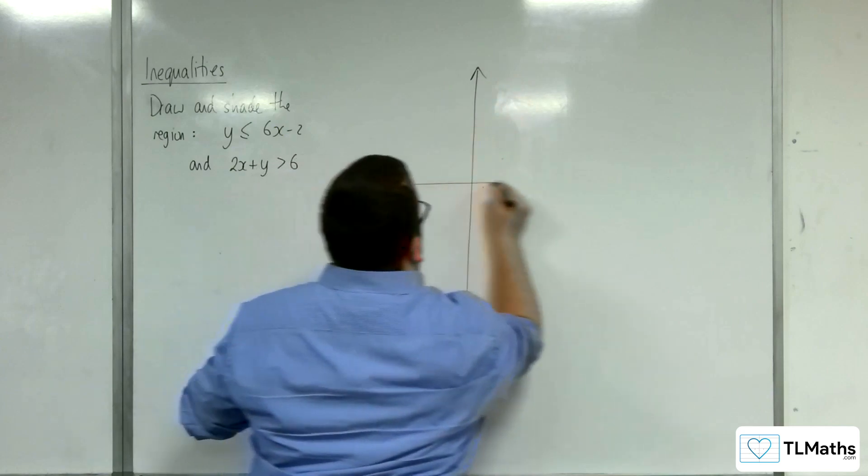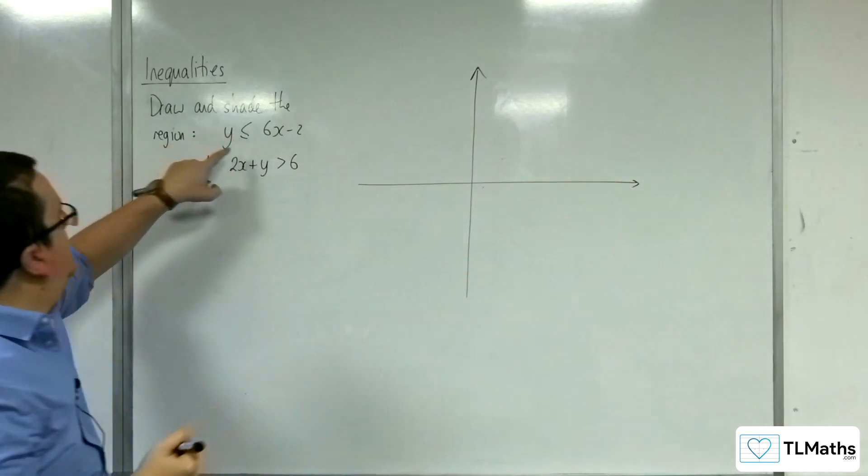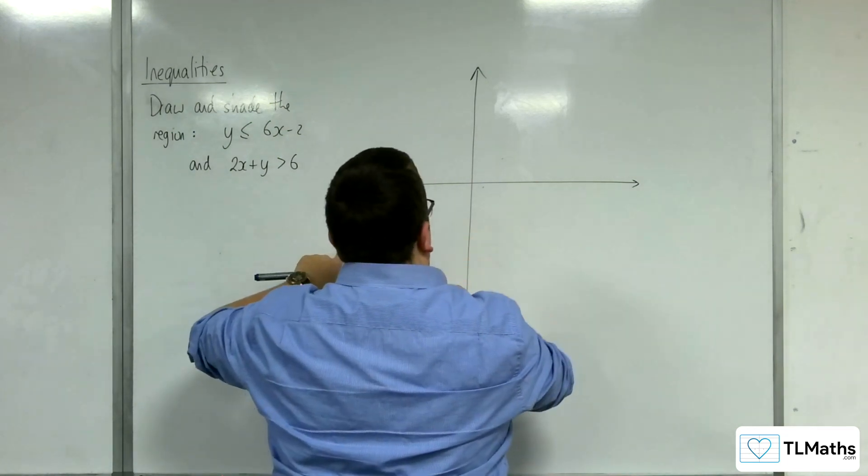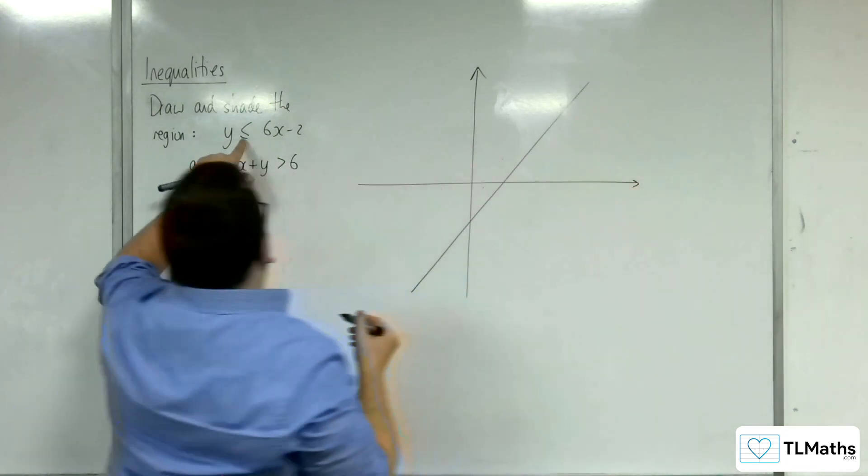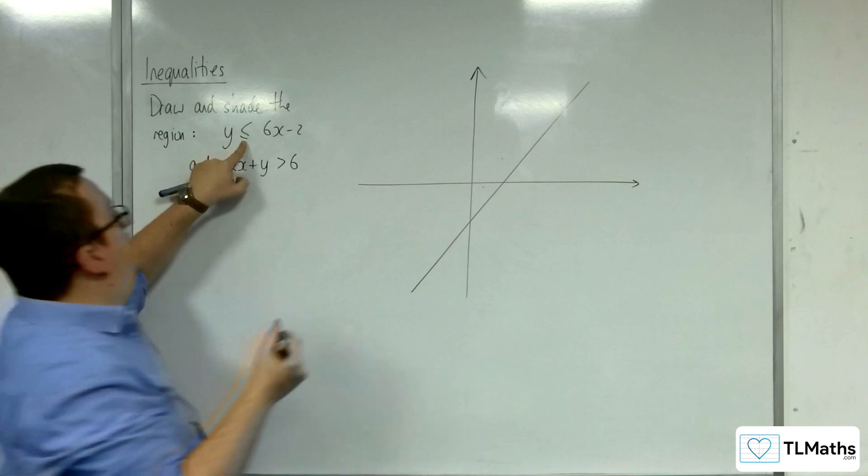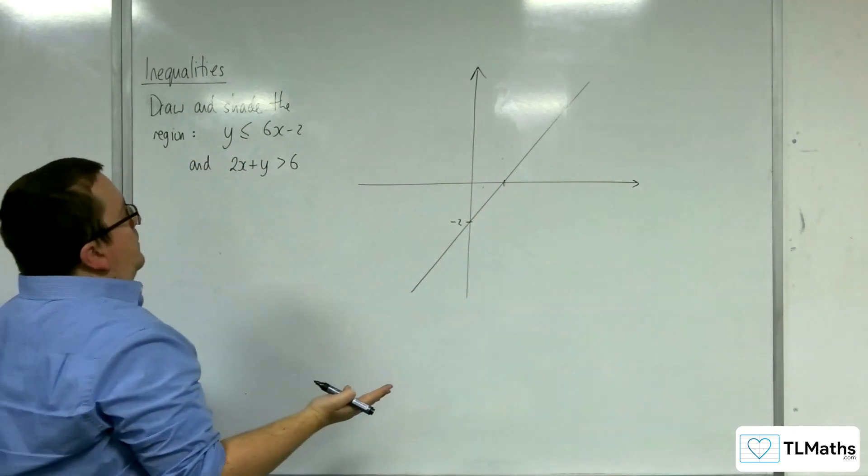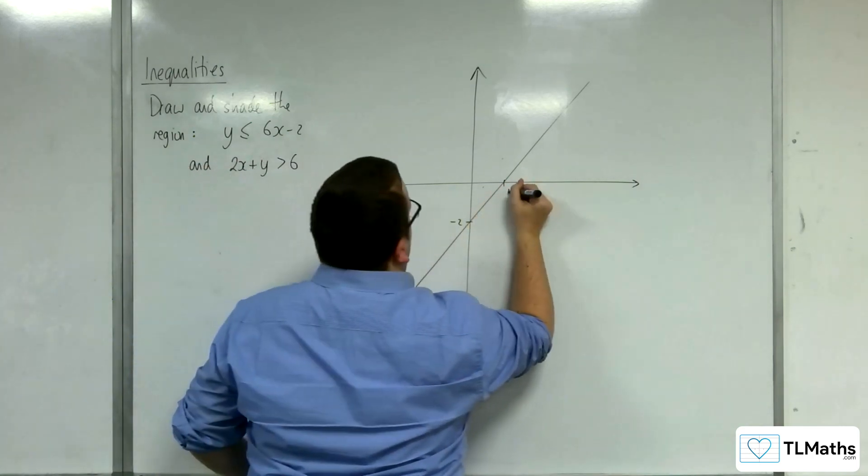Okay, so first of all, this line here, y equals 6x - 2, will look something like this. It's a solid line because of the less than or equal to, so that's -2. And that point there will be when y is 0, so that will be at 2/6, so 1/3.